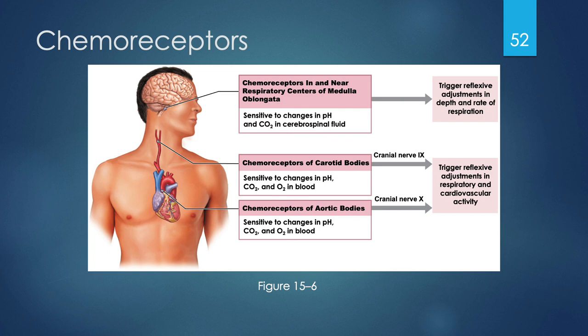Figure 15-6 shows common chemoreceptor locations. Chemoreceptors near the respiratory centers of the medulla oblongata sense changes in pH and carbon dioxide levels in cerebrospinal fluid, allowing adjustment to respiration depth and rate. Chemoreceptors of the carotid bodies and aortic bodies, via cranial nerves 9 and 10 respectively, send changes in pH, carbon dioxide, and oxygen in the blood to the brain for integration, allowing reflexive adjustments in respiratory and cardiovascular activity.